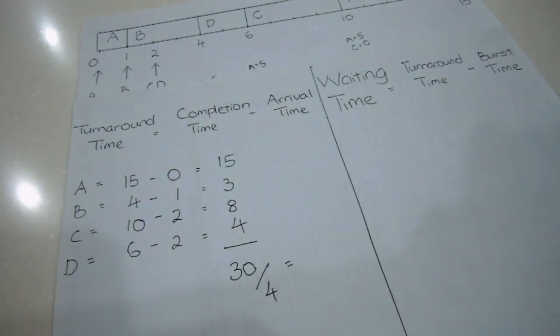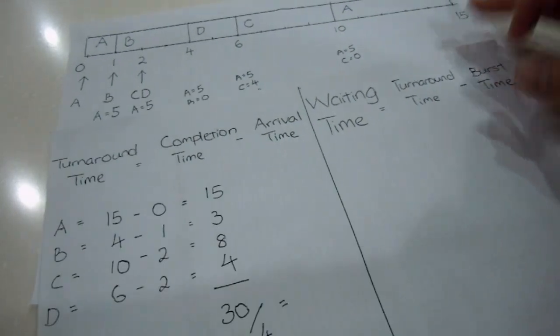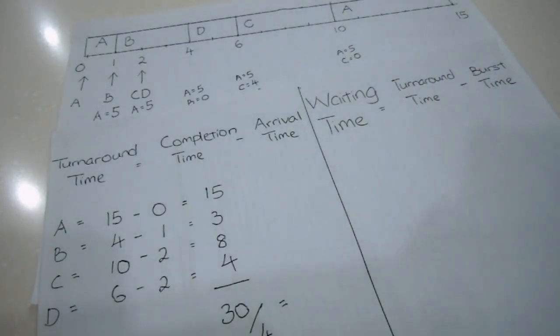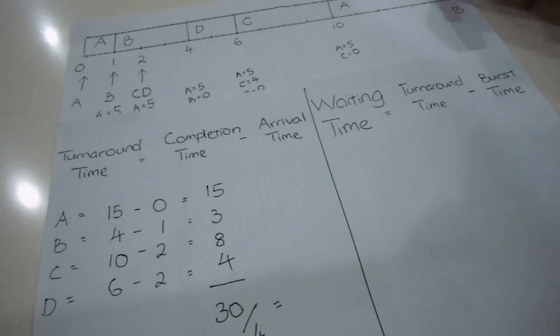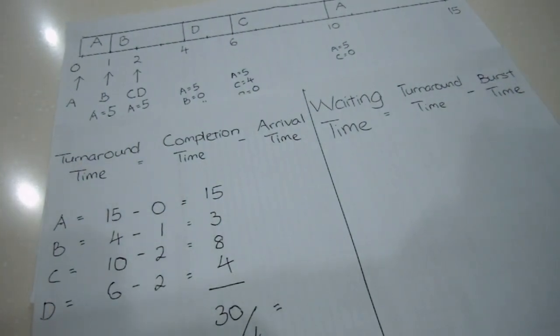Now, how do we get the waiting time? For waiting time, you can actually use the formula of start time minus the arrival time. But I prefer to use turnaround time minus burst time. Both of these formulas will give me the same result, but by using this formula, things will be simplified.